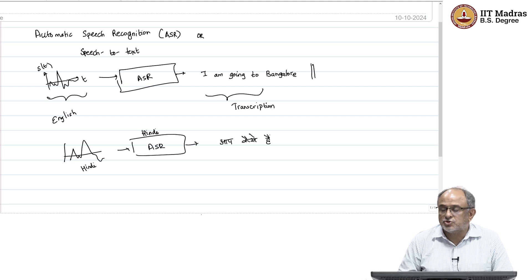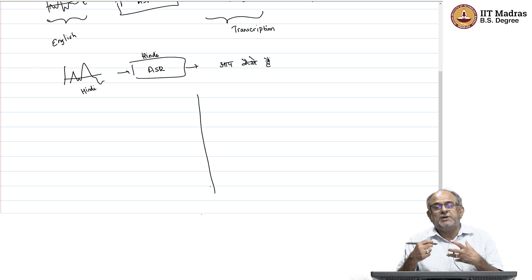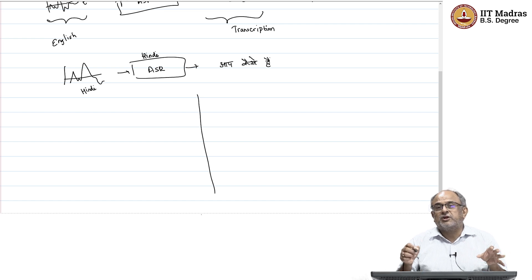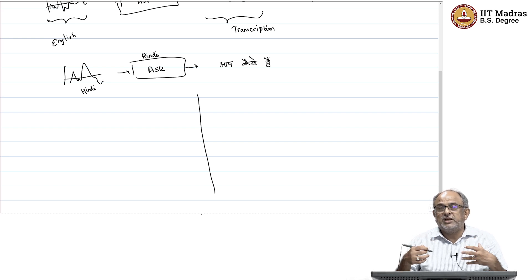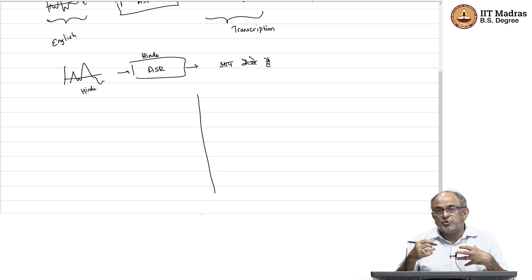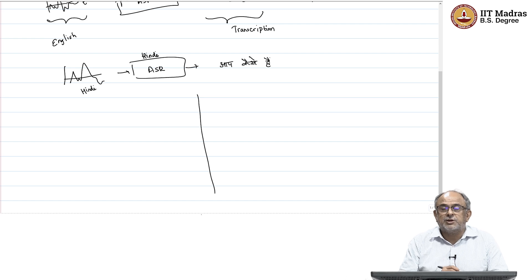So why is speech recognition so difficult? The basic idea is that every speaker — even the same person speaking the same sentence again and again — does not produce the same signal. The signal keeps changing, so the model has to recognize that all these differences exist but the meaning is the same. There is a lot of variability in the speech signal. Over the last 3-4 years, we have come up with very good neural networks that push the state of the art to performances almost competing with humans.